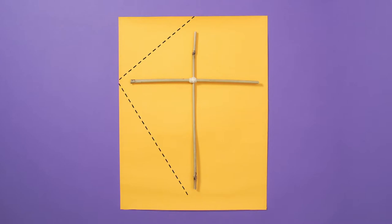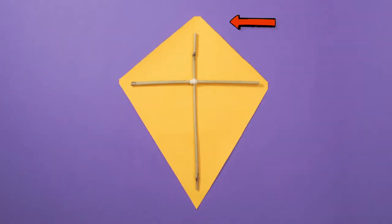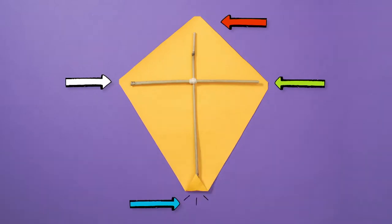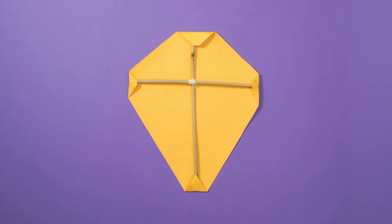Cut diagonally from edge to edge like this. Then at each point, fold the excess paper over like this. Then fold the rest of the paper over like this.